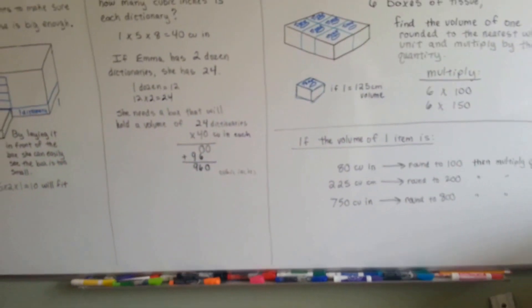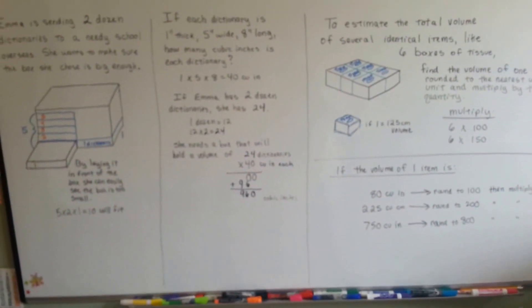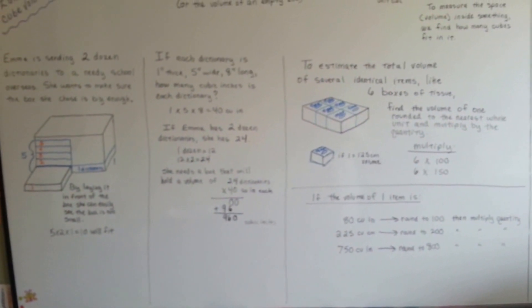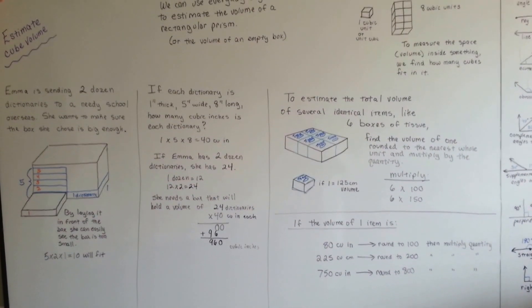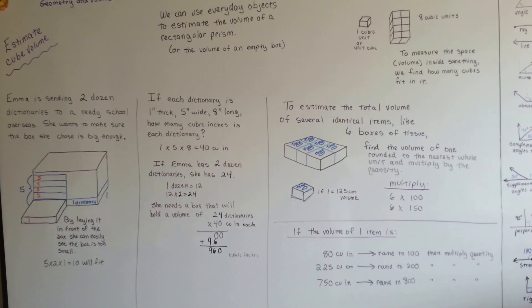That's estimating cube volume. All you're doing is rounding it to a whole number, and then multiplying it by the quantity. That's all. No big deal. Not that hard. See you next video. Bye!